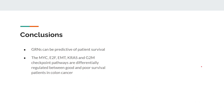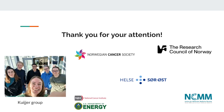To conclude, gene regulatory networks can be predictive of patient survival in cancers, and we found that in colon cancer the MYC, E2F, EMT, KRAS, and G2M checkpoint pathways are differentially regulated between good and poor survival groups. With that, I would like to thank you for your attention, and also thank my group and all the funding bodies that supported this work.